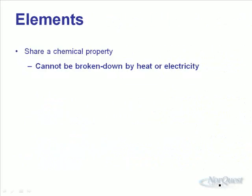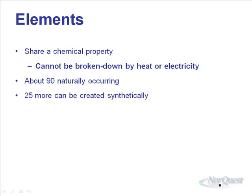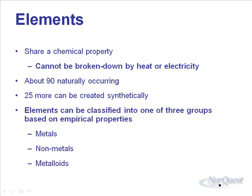We'll start by looking at elements. Elements share one chemical property in common — they cannot be broken down by heat or electricity. If you apply heat or electricity to an element, the only thing you're going to do is maybe change its state. There are about 90 that occur in nature, and 25 more can be created synthetically.